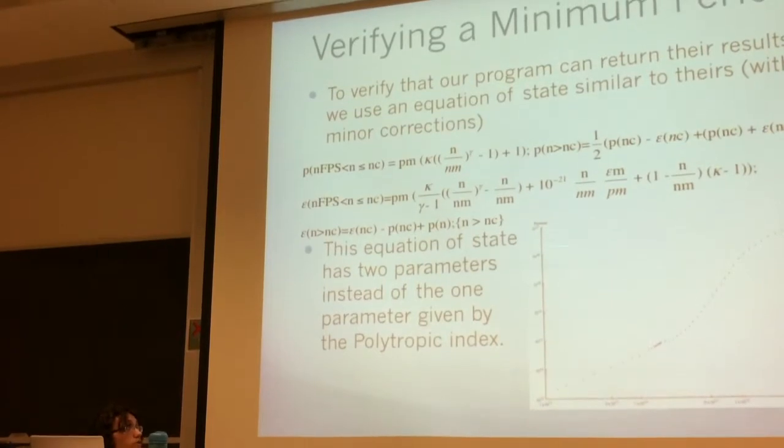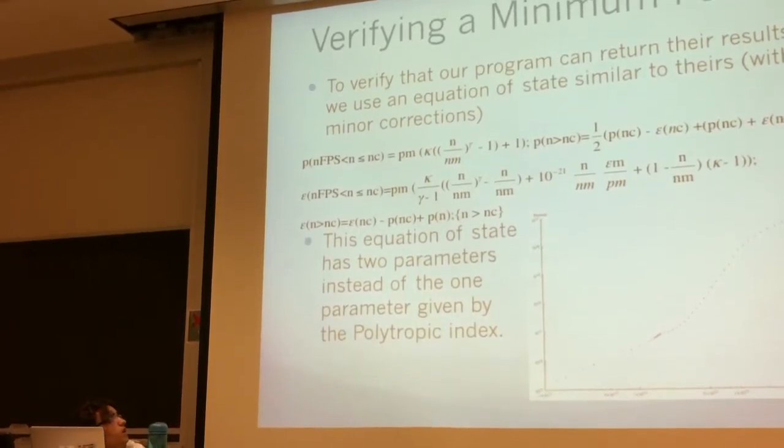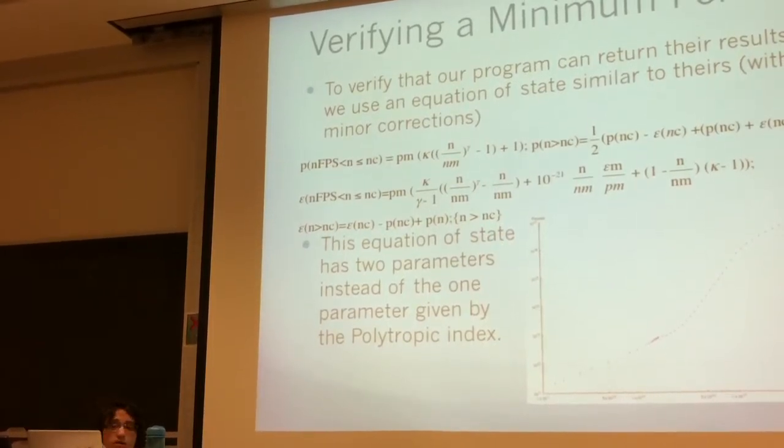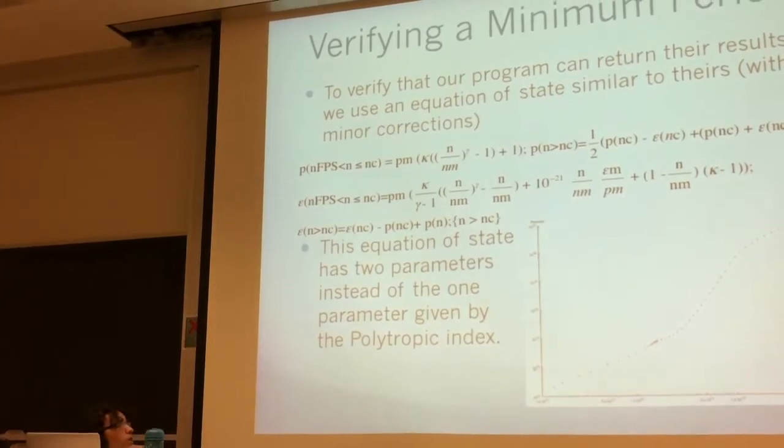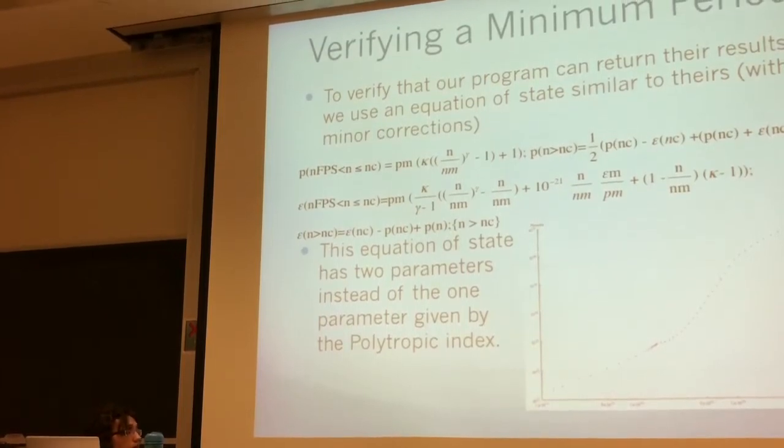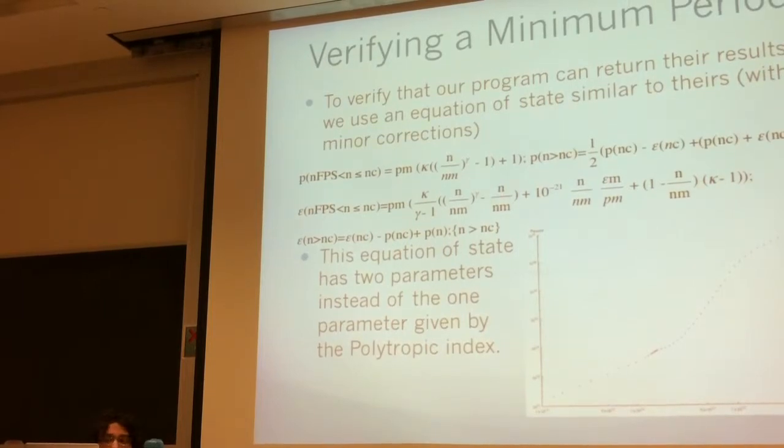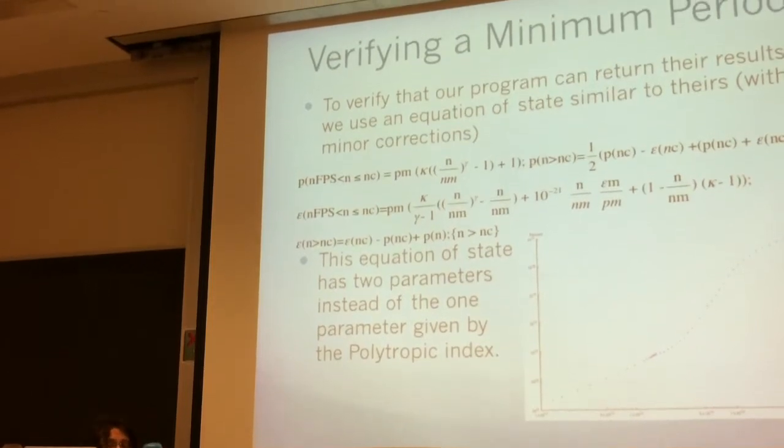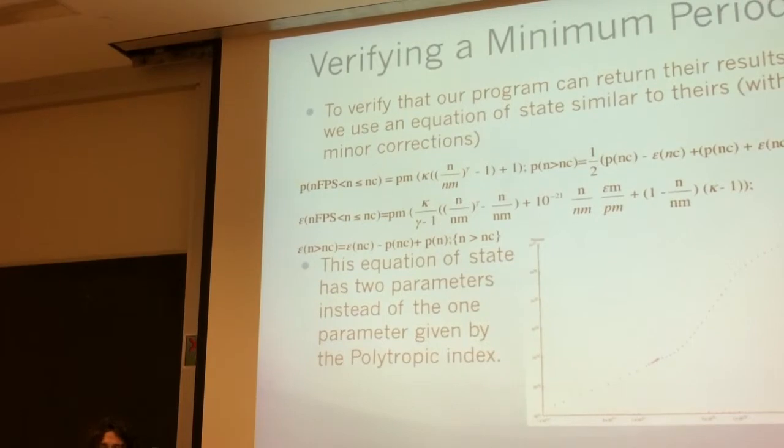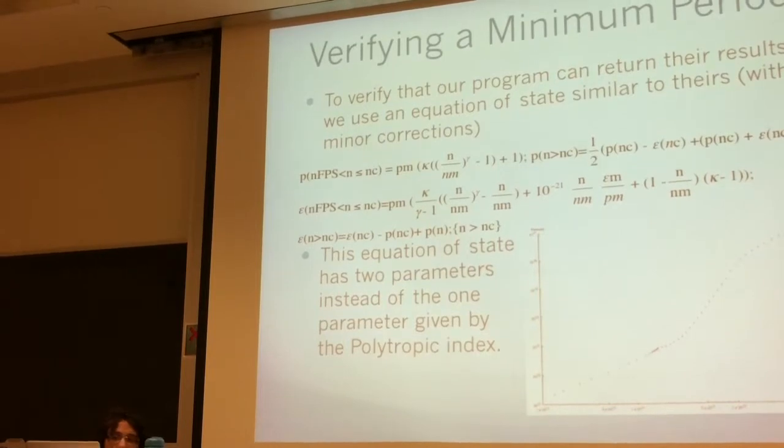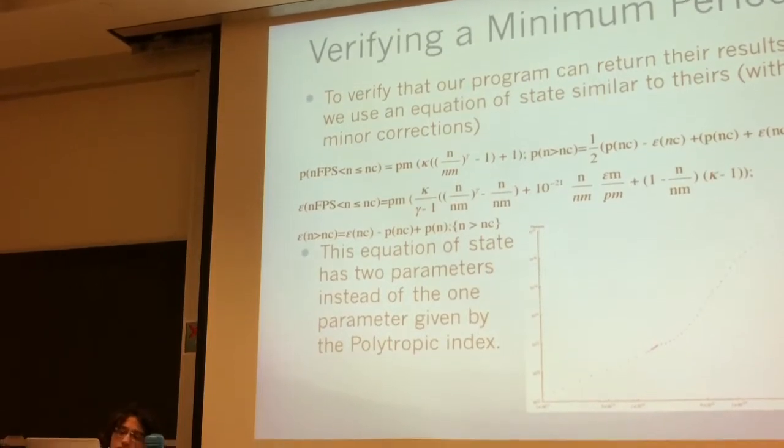So in order to verify a minimum period, this is the equation of state I used. I'm not really going to go into much detail about it, but basically the parameters are gamma and kappa. All these other variables have to do with content inside the program. But basically, to verify that our program can return their result, we use an equation of state similarly with a width of correction to the common theory. This is kind of a demonstration of the equation of state. So instead of one parameter given by a polytropic index, we have two parameters.